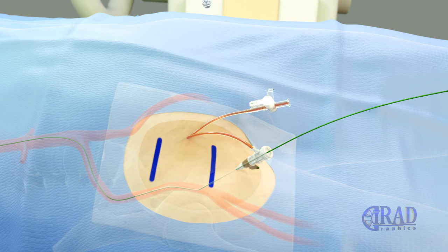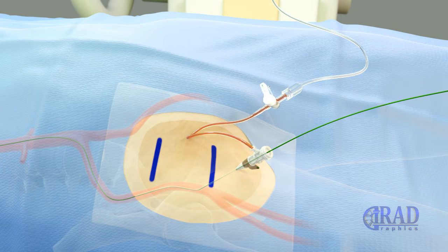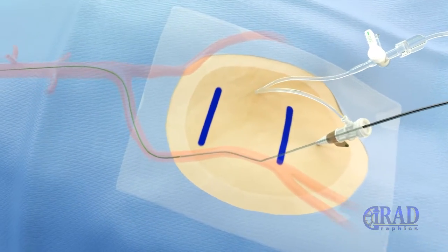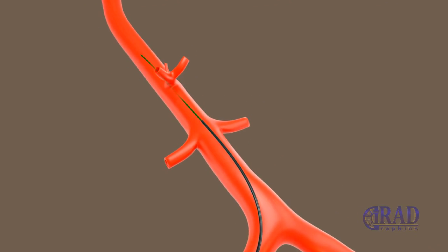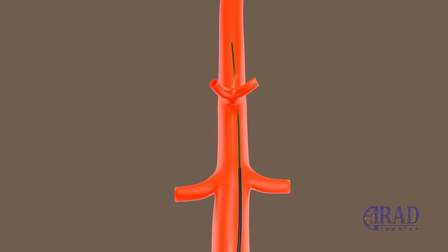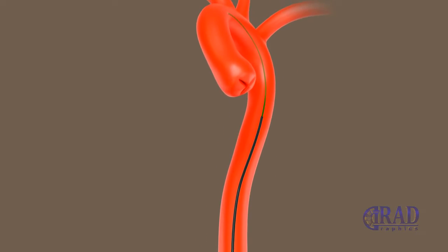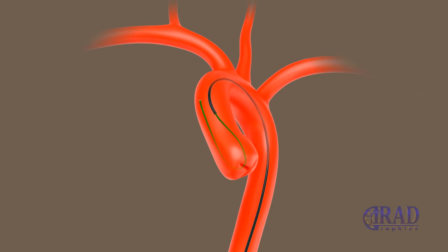To ensure access safety, contrast may be injected, and to prevent clotting, saline infusion commences through the sheath. Specific types of curved catheters are advanced over the wire through the sheath into the aorta, and subsequently the curved tip of the catheter is formed in the aortic arch or at the aortic valve by pulling back the wire into the catheter and simultaneously twisting the catheter.